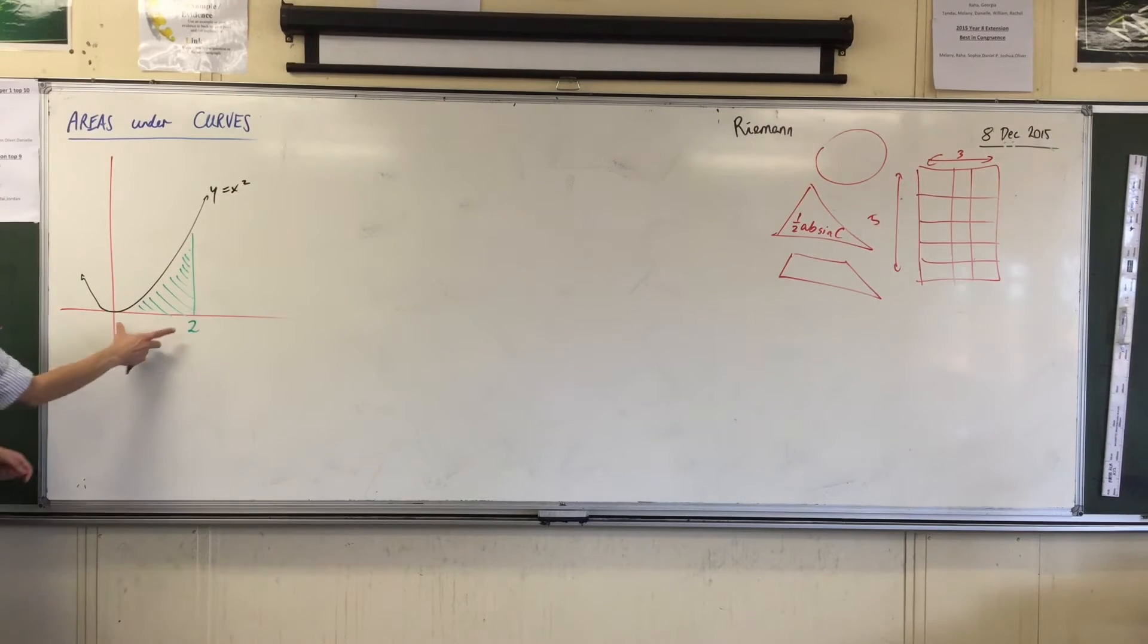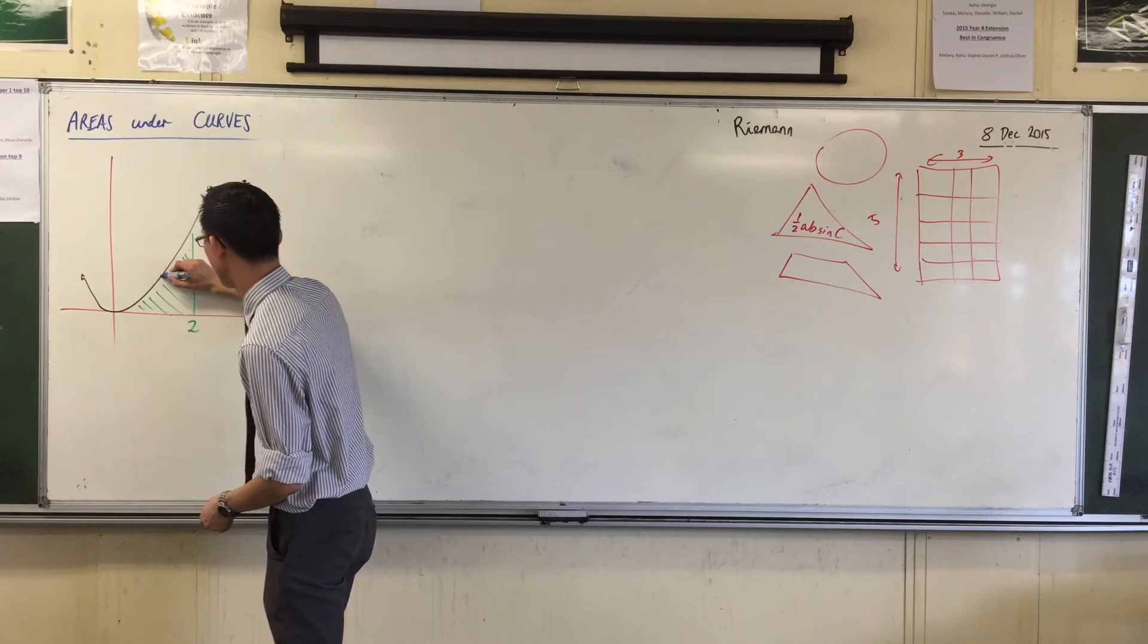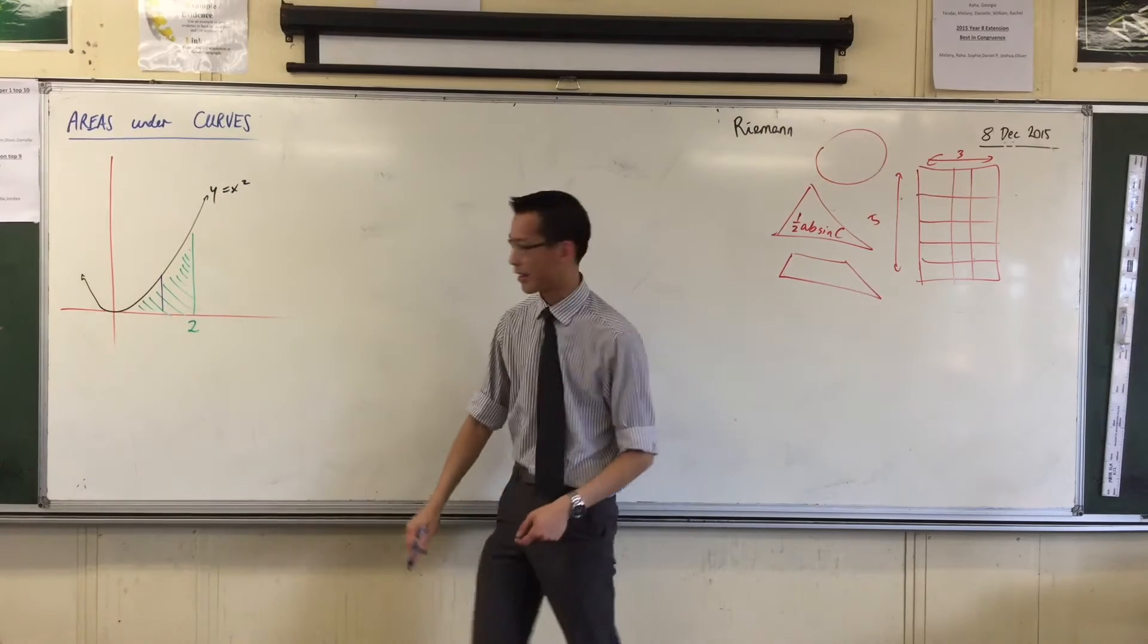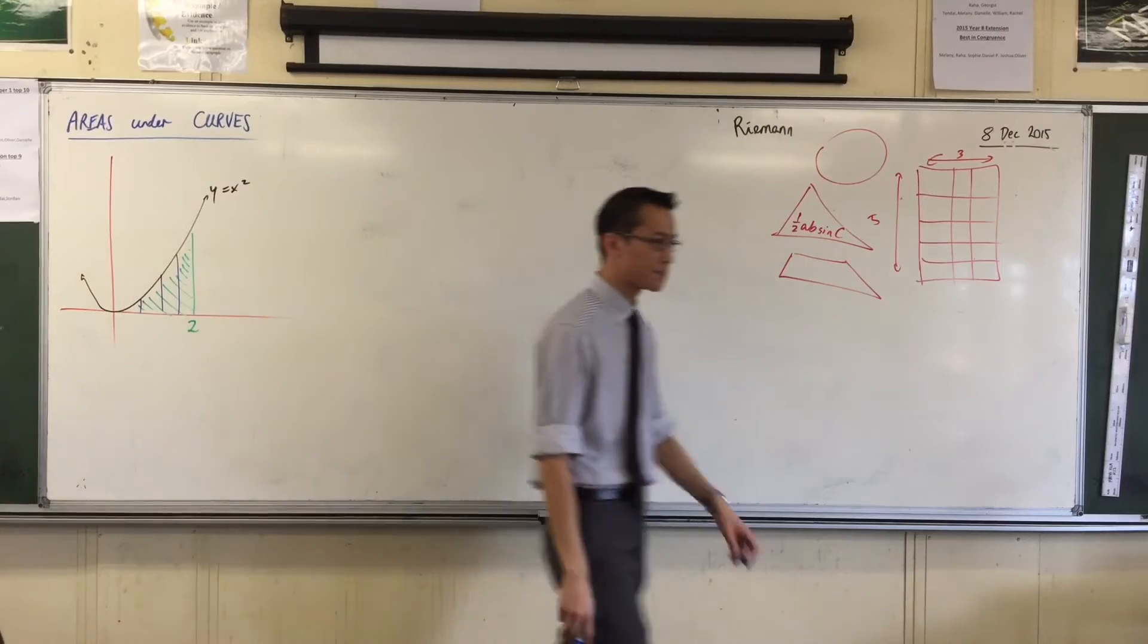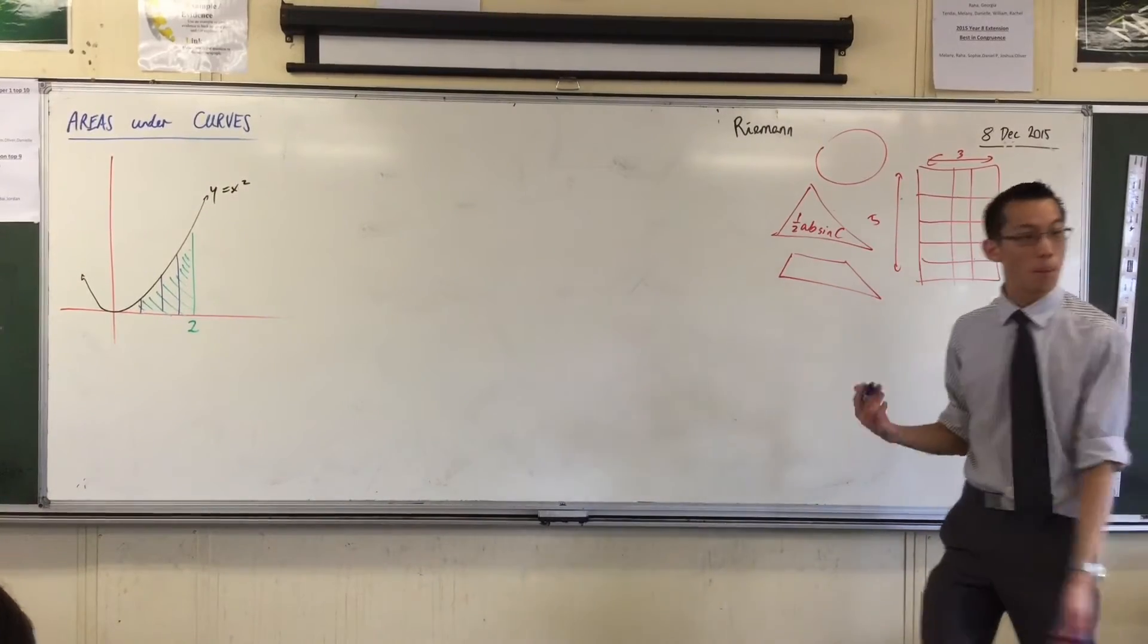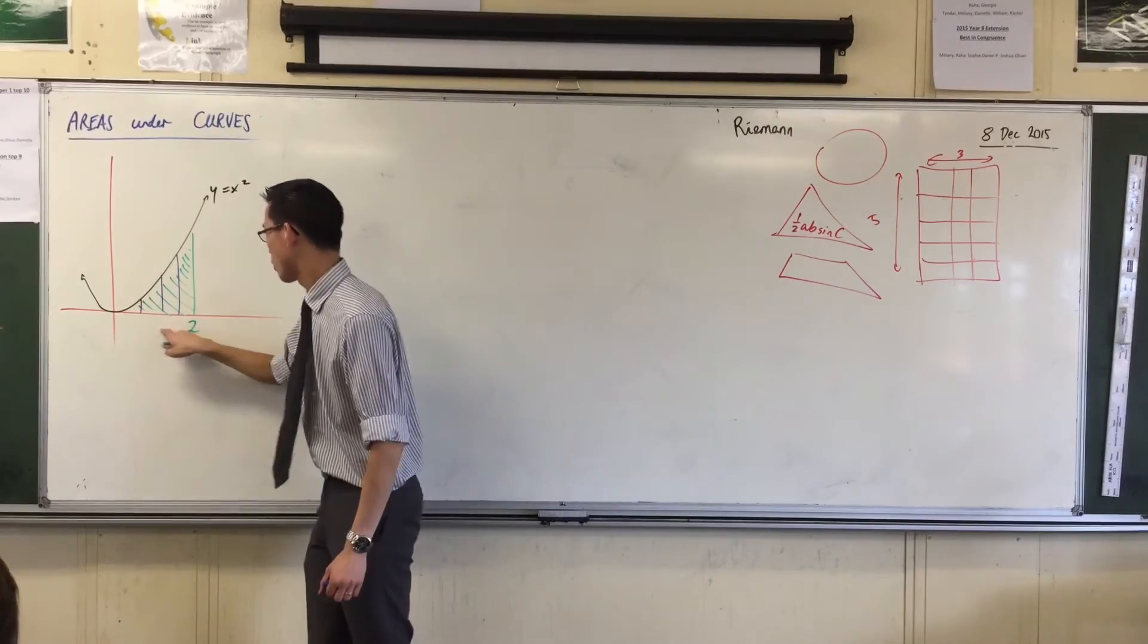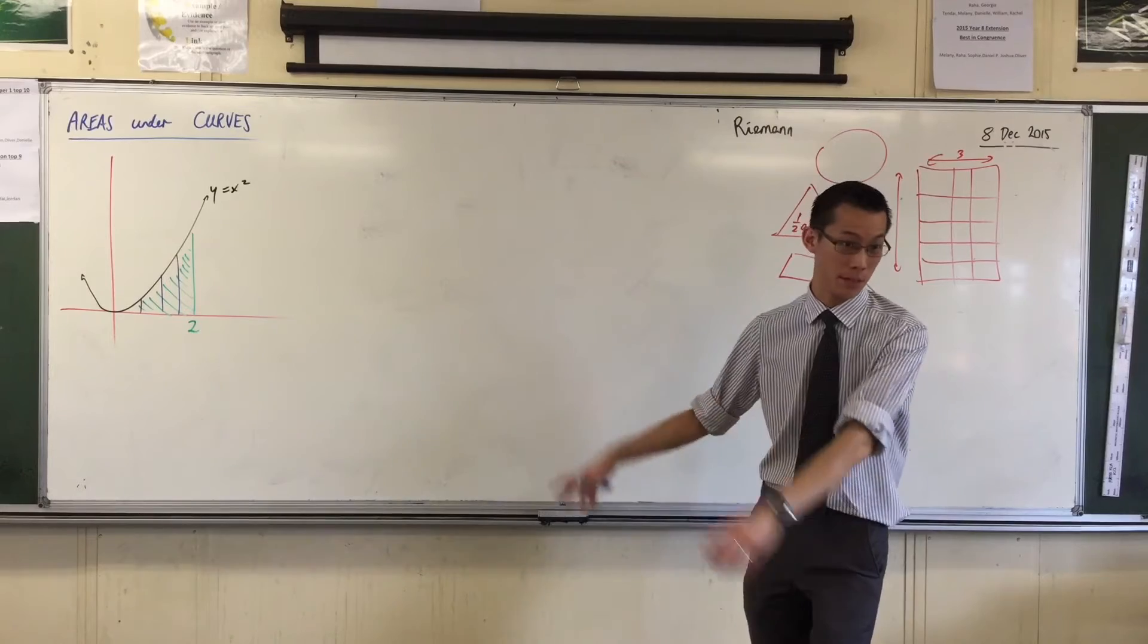Draw some vertical lines in for me so that we can divide this interval. Well, let's divide it maybe into four, for example. So if you halve, and then if you halve these two. Riemann said, well, each of those four pieces that I've got, one, two, three, four, I still don't know what each of those is because they still have that curvy bit in there.